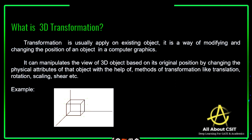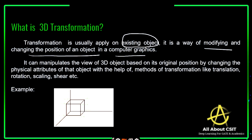So what about transformation? A transformation is usually applied on existing objects — the object has to be created first, then only you can apply the transformation. Transformation is trying to change the shape as well as the object, like colors or positions. It is a way of modifying and changing the position of an object in computer graphics. We can apply transformation techniques on any 3D object to modify it or change its position.